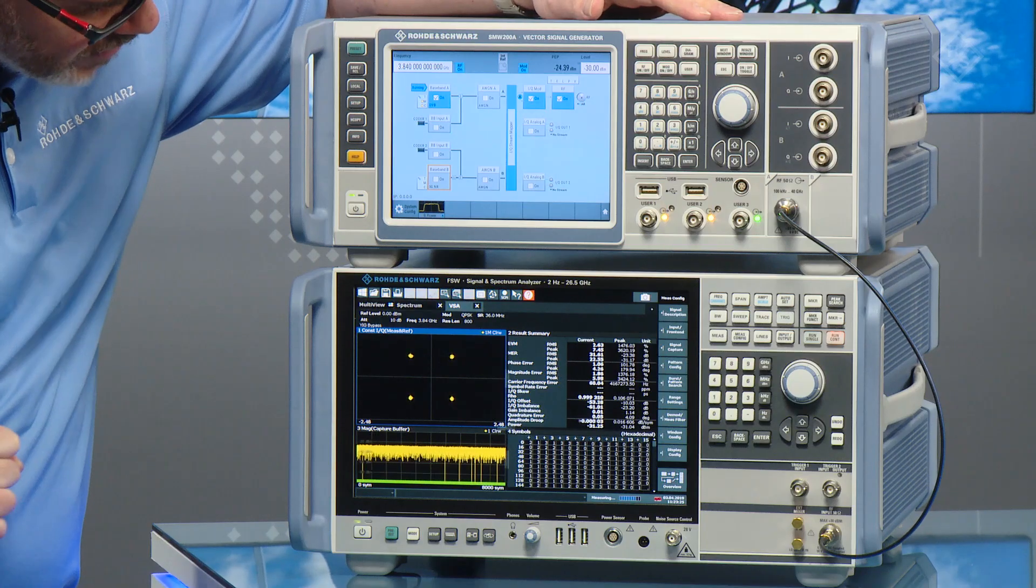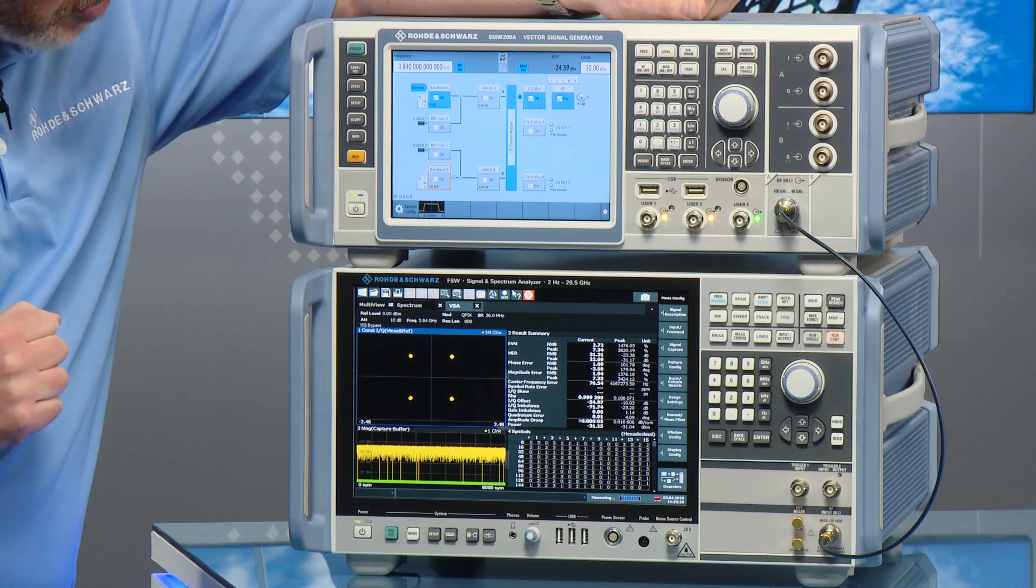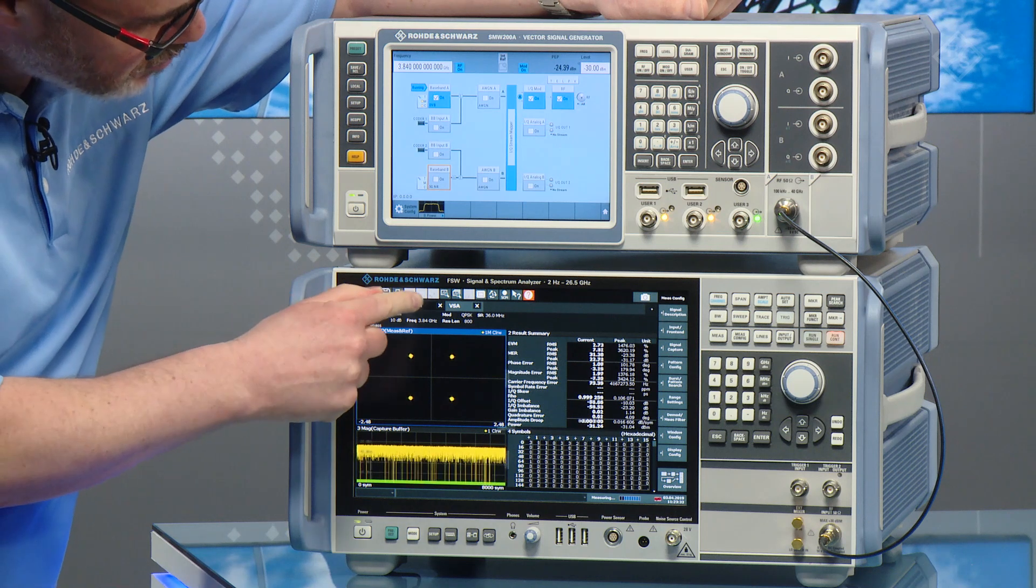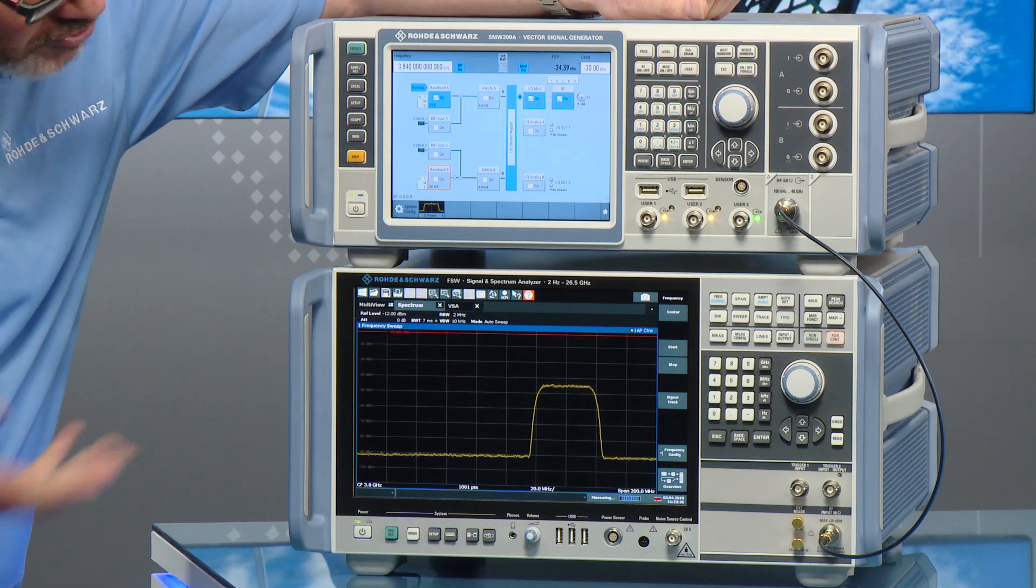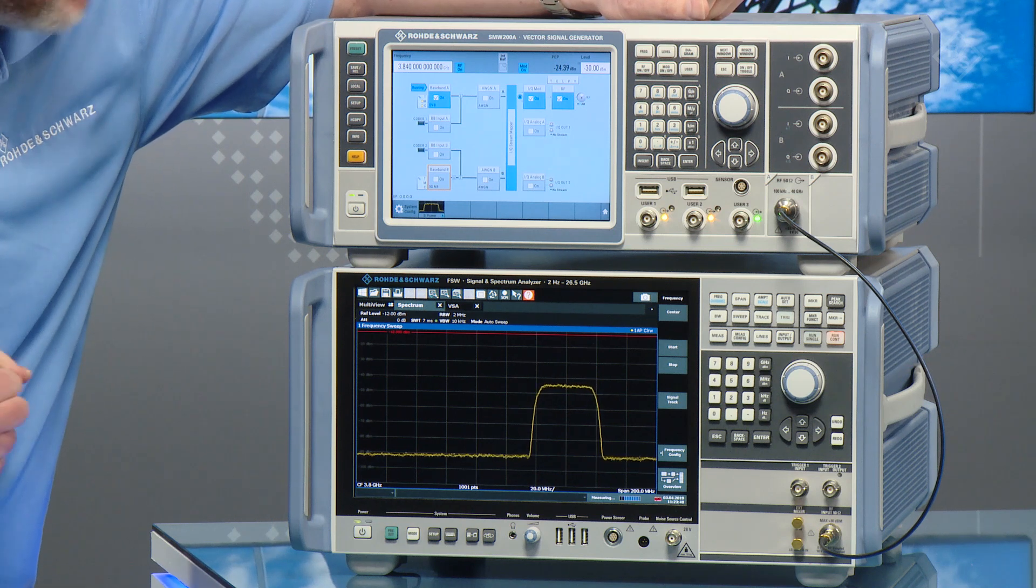And down on the spectrum analyzer here, we're demodulating this signal and you can see the performance that we've got some good EVM numbers. Now if we switch to the spectrum view, you see the traditional spectrum view, you see that we have the DVB-S signal.